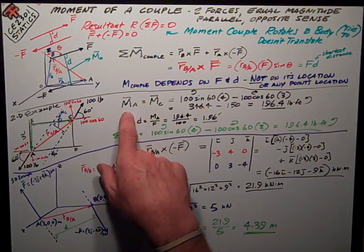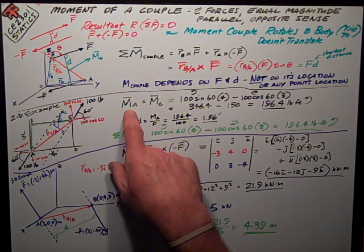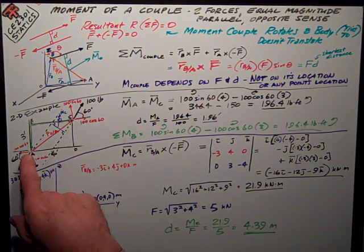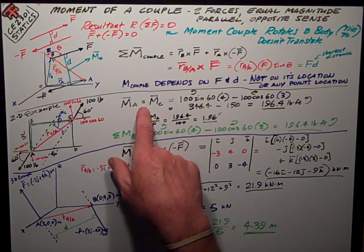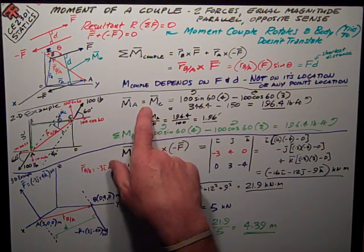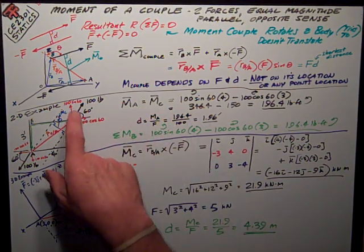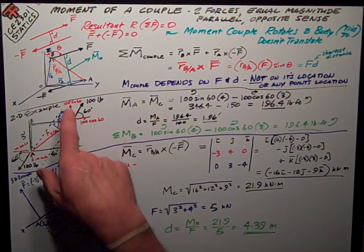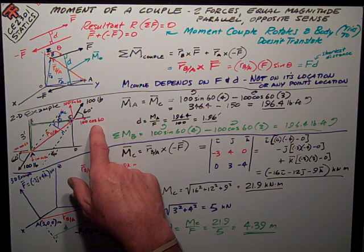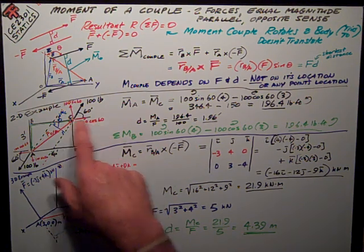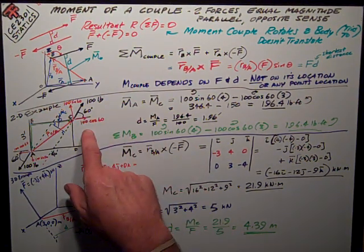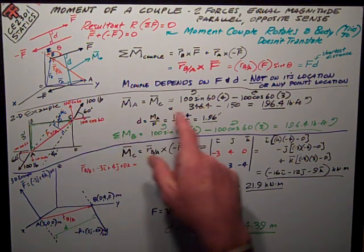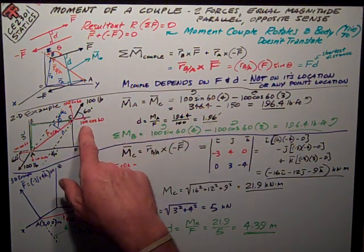I can just take the moment of this force applied at point C about point A, and that will give me one way to calculate it. I divide this force up into two components: 100 sine of 60 in the Y, 100 cosine of 60 in the X direction. This is just a scalar solution, so I'm not going to worry about my signs. I'm just going to worry about the direction of rotation that these two create.